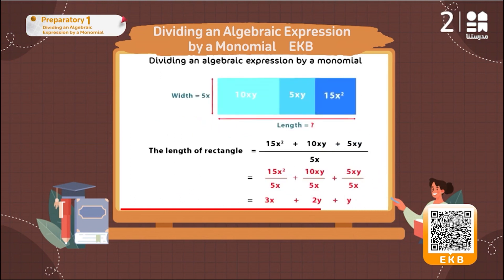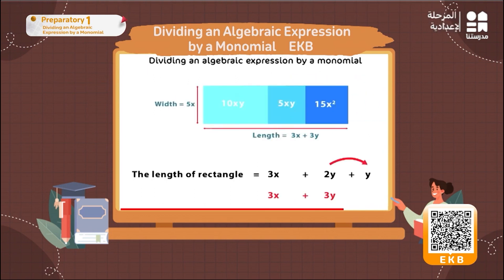The division result equals 3x plus 2y plus y. Then we add the like terms to get the length of the rectangle, which equals 3x plus 3y.